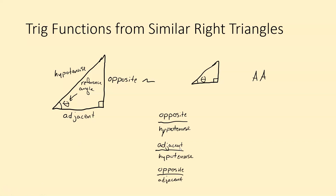There are three different ratios we're going to talk about in this intro to trigonometry lesson — there are more you'll learn later, but these are the three most basic ones: opposite over hypotenuse, adjacent over hypotenuse, and opposite over adjacent. Any right triangle with the same reference angle must be similar, so they must have the same ratios. All three of these ratios have to be the same even if the triangles are different sizes — the ratios will simplify to the same thing.